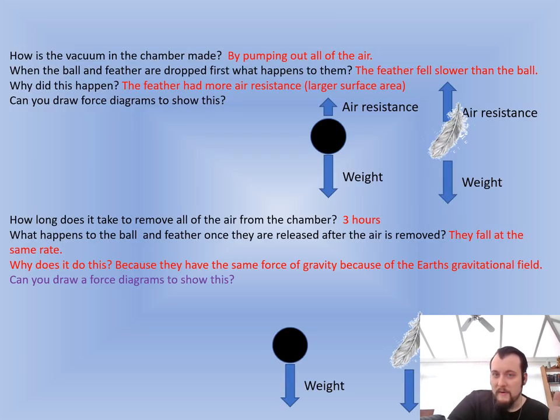So the answers, they pumped all the air out. They sucked it. The feather fell slower than the ball, which you were probably expecting because the feather had more air resistance, which has a larger surface area. It's like a parachute. Here's the example. You see, the arrows are bigger. How long did it take to remove all the air? About three hours, they said. What happened? They fell at the same time. Now I know they were kind of playing it up a bit, but it's amazing, isn't it? That we can do that. That we can prove it. That if you drop a bowling ball and a feather at the same time, they fall at the same rate. Just think about that. Like that's mad.